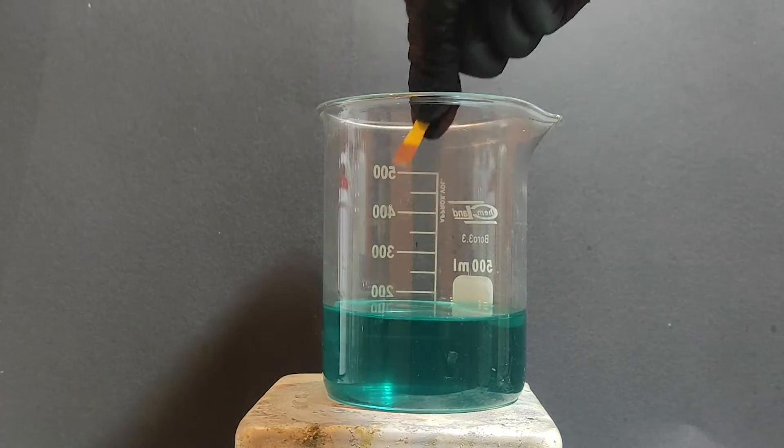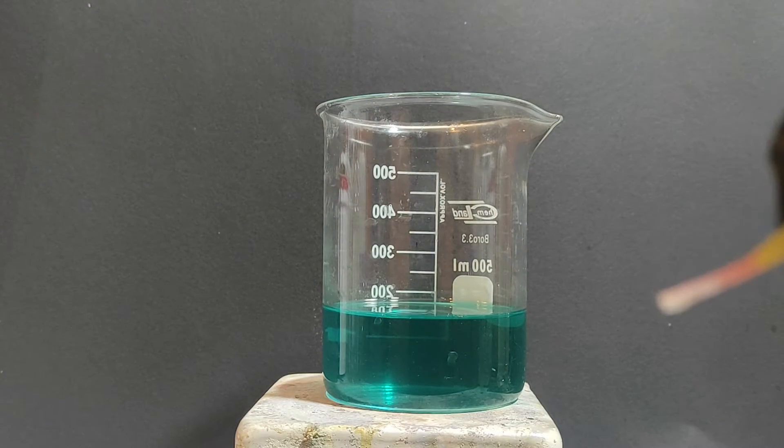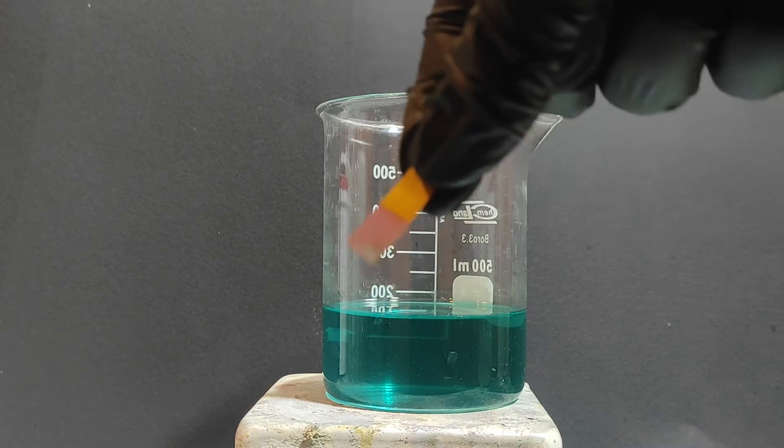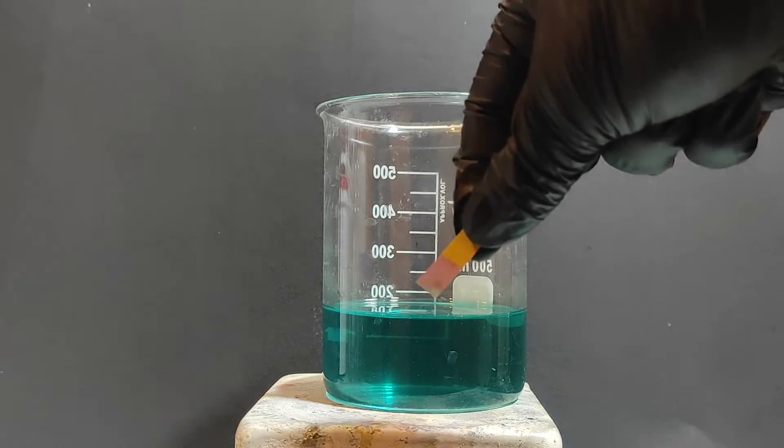The pH of the solution was tested and it got red indicating a strong acid. The oxalic acid has a pH of 3 and the nitric acid was already depleted before the addition.